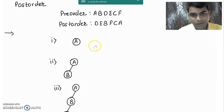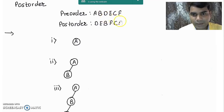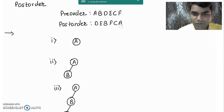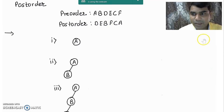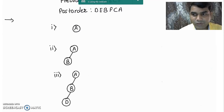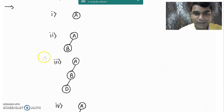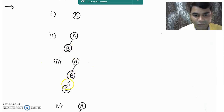Now we take the next element from the pre-order traversal sequence, that is node D, and check it into the post-order traversal sequence. If it appears before root node A, it means it is part of root node A. If it appears before B also, it means it is part of node B. And since in step number 2 node B does not have any left or right child, the coming element D must be placed to the left hand side of node B in step number 3, where it is drawn.